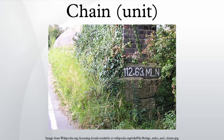An acre is the area of 10 square chains. The chain has been used for several centuries in Britain and in some other countries influenced by British practice. By extension, chainage is the distance along a curved or straight survey line from a fixed commencing point, as given by an odometer.